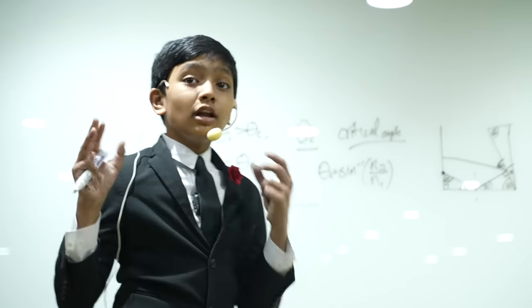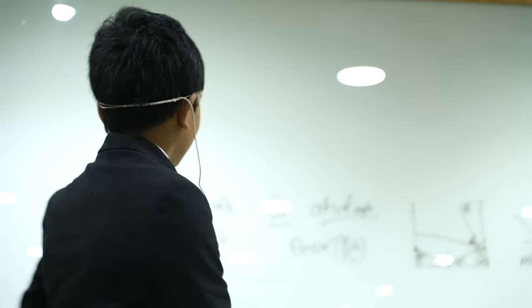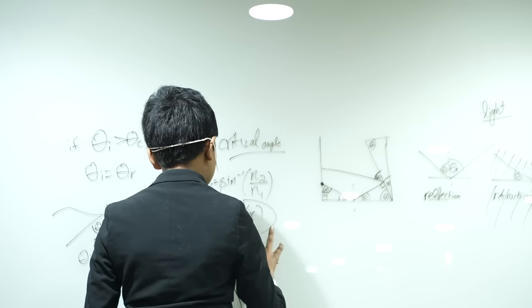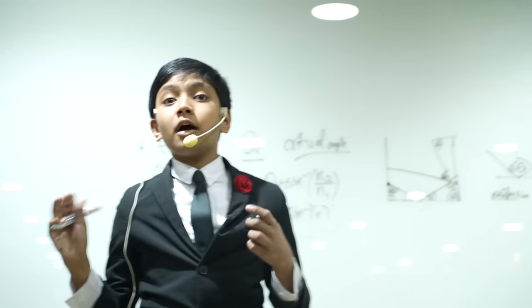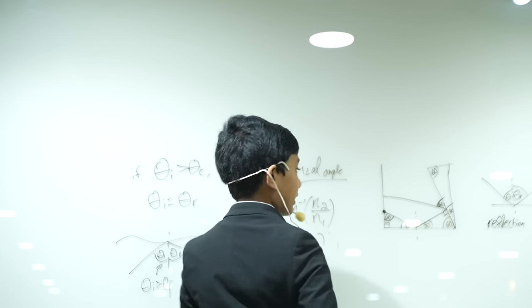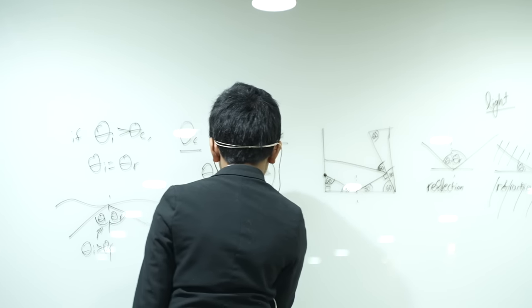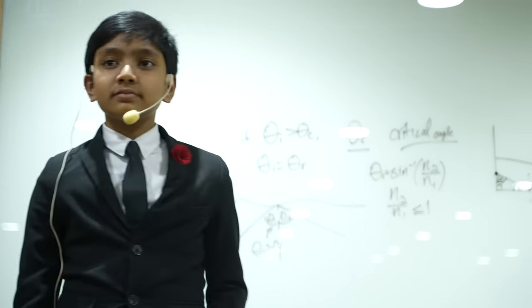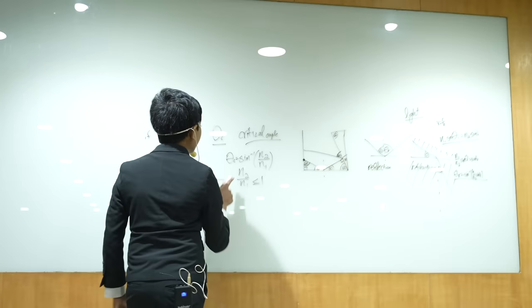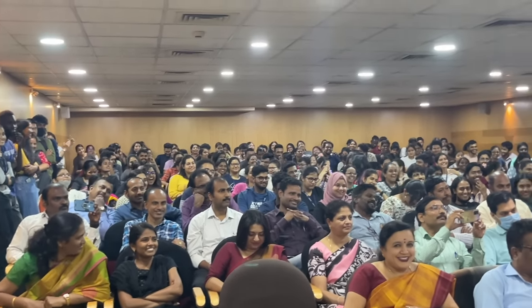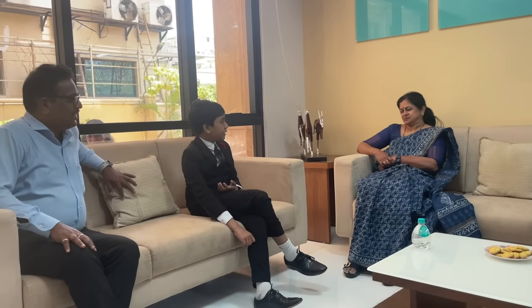Does anyone know what that means? Here's a hint: X cannot be greater than 1 if you want to plug it into sine-inverse of X. So if N2 over N1 cannot be greater than 1 — it has to be less than or equal to 1 — what does that mean regarding the indices of refraction? N2 cannot be greater than N1. Good — finally, a good answer on something mathematical.